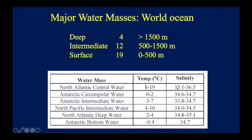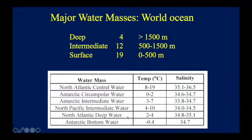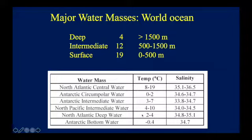For instance, we have North Atlantic Central Water (NACW), and its TS range is like a fingerprint to characterize it. If you find any water within that range, we know it comes from NACW. Similarly, water within the Antarctic Circumpolar range is AACW, and North Atlantic Deep Water (NADW) has its own range. If you plot ocean data on a TS diagram and it falls within NACW's range, that tells you it is NACW.